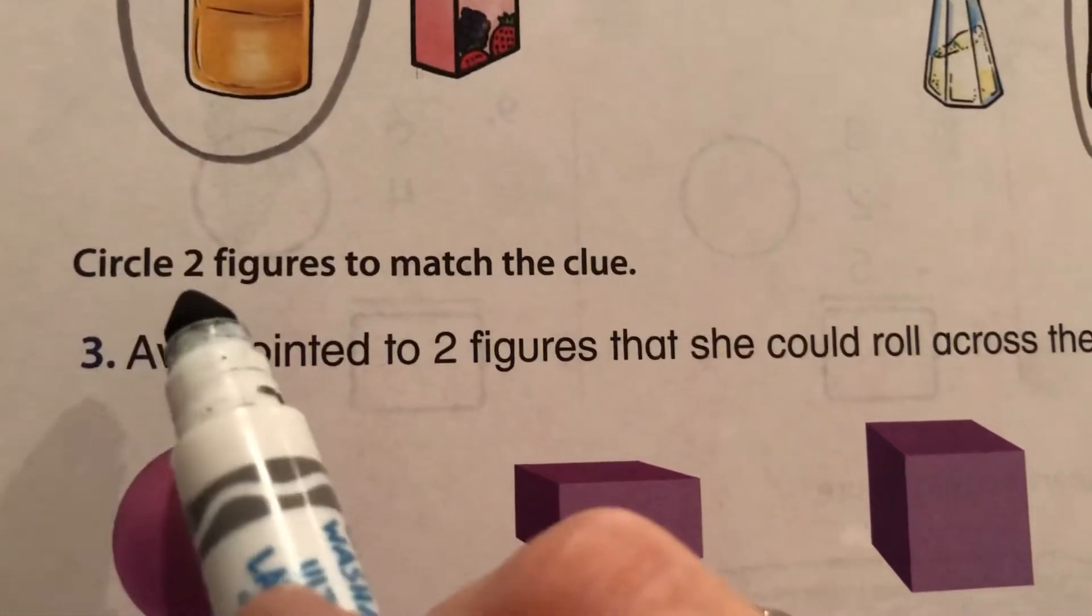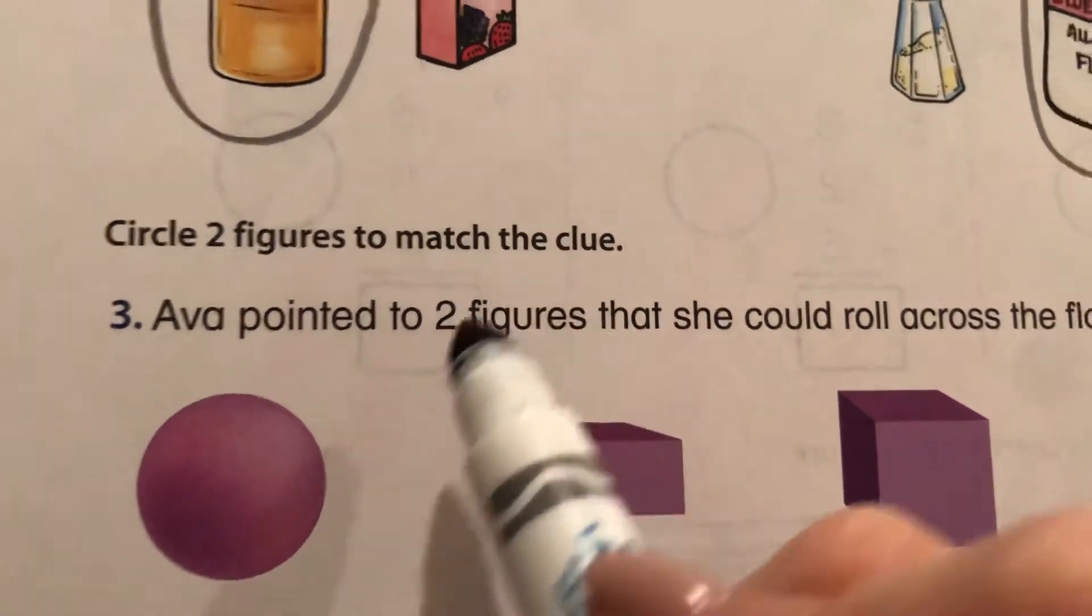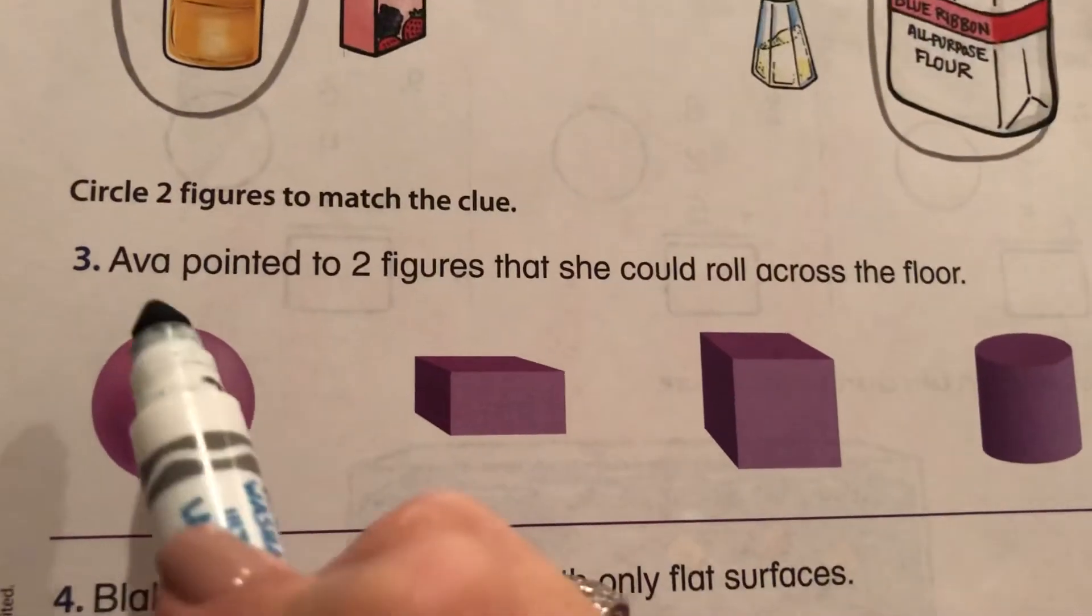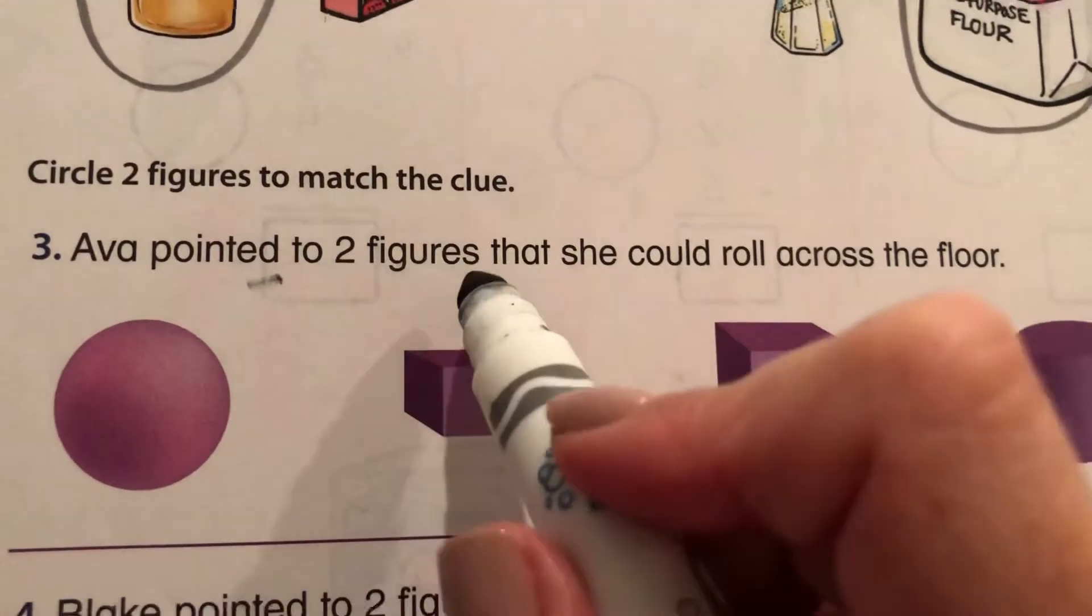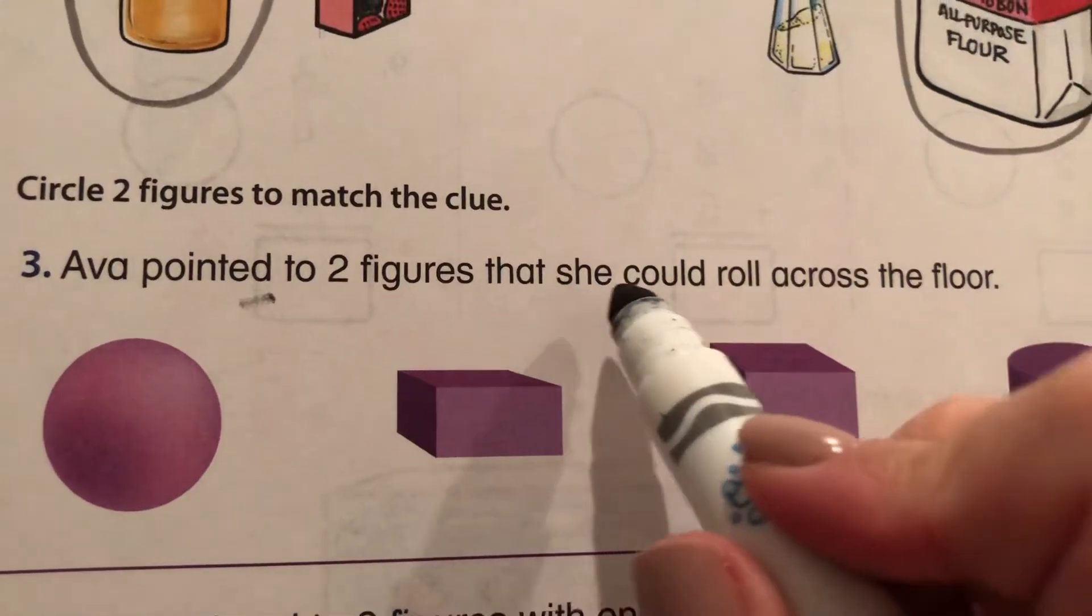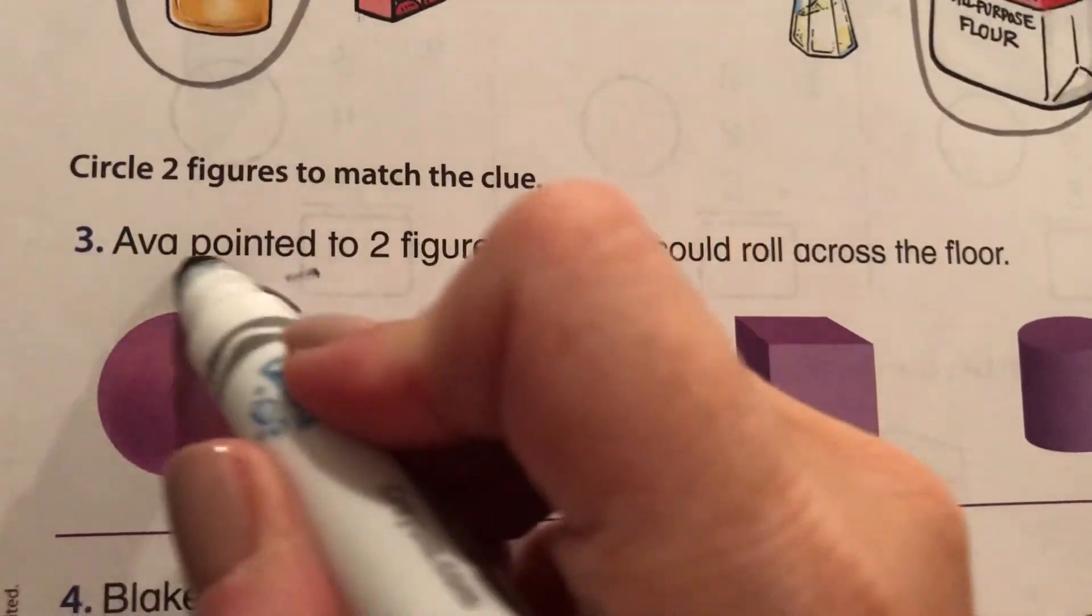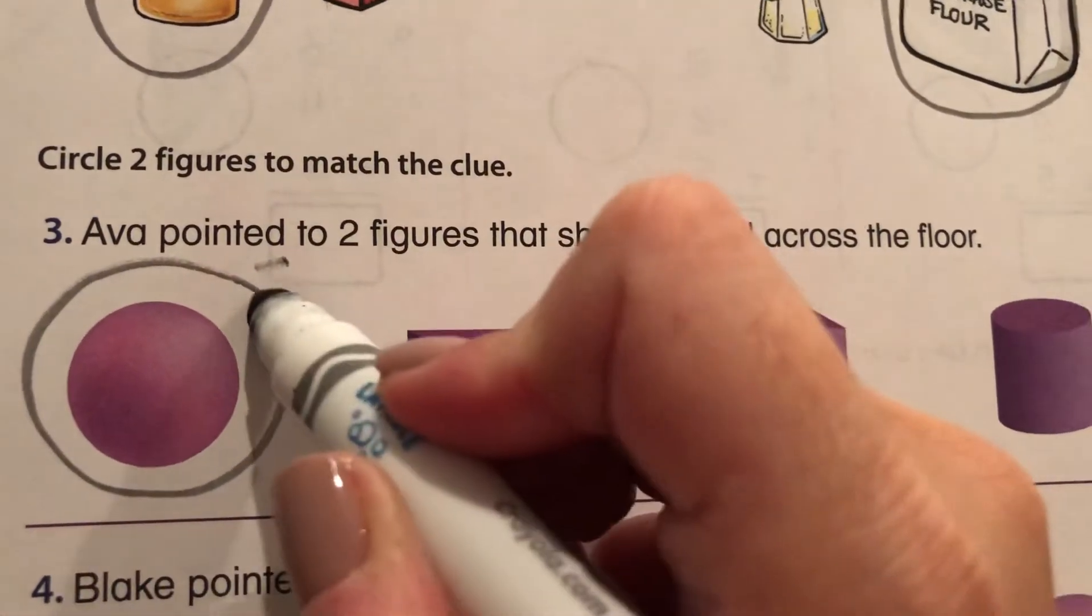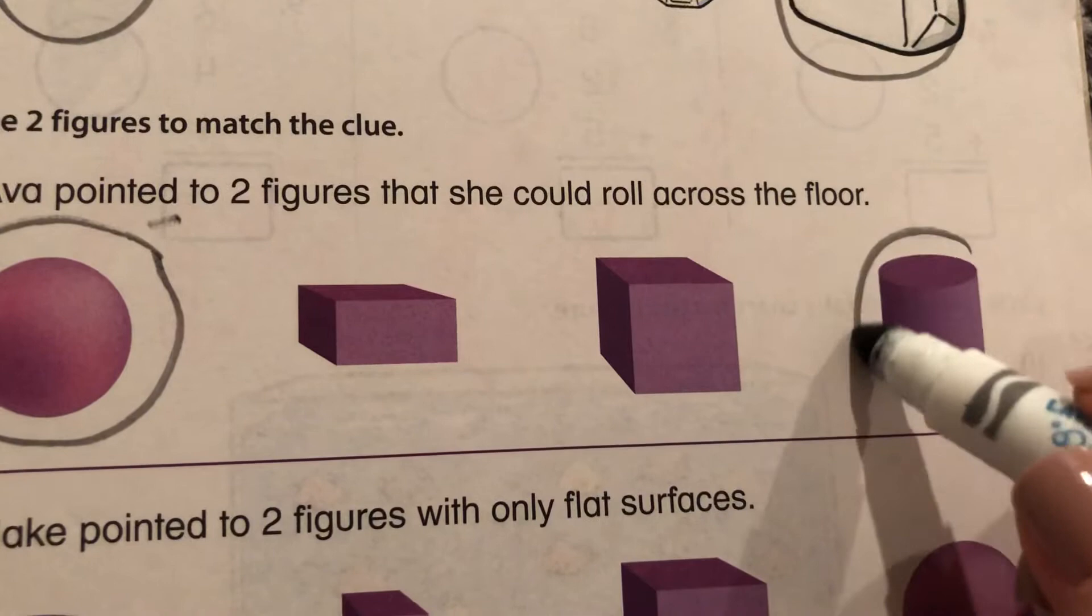This says circle two figures to match the clue. Okay, let's read the clue. Ava pointed to two figures that she could roll across the floor. Yeah, she could roll a sphere, not a rectangular prism, not a cube, but yes a cylinder.